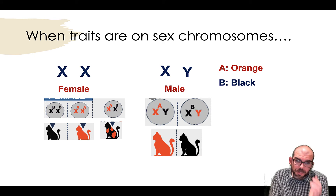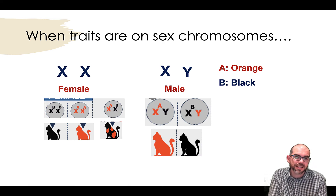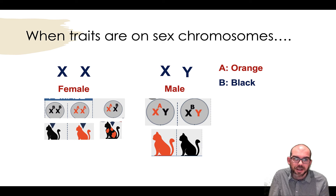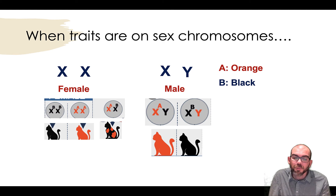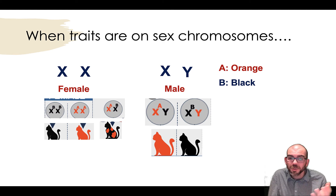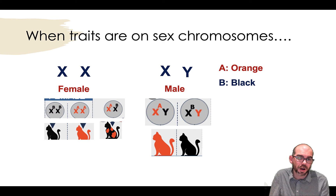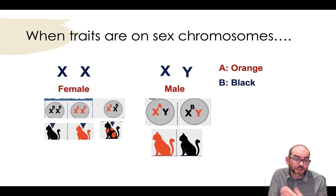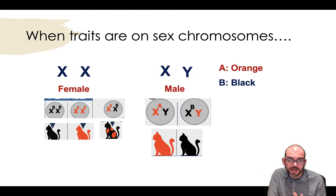This is why males are often more susceptible to genetic diseases if they're sex-linked than their female counterparts. Females can be carriers — meaning they have one of each gene — whereas males, you either have the gene or you don't. Colorblindness is the most common example of this; there are more males that are colorblind than females because of this very reason.